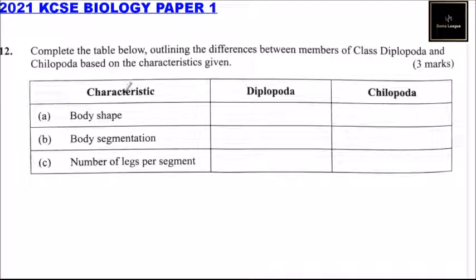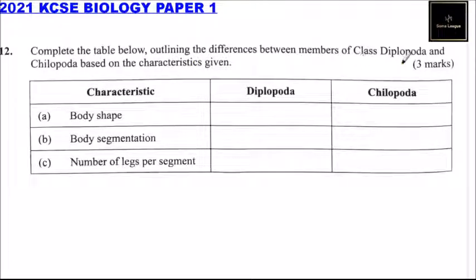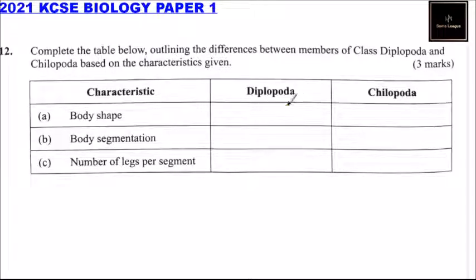Question number 11: complete the table below outlining the differences between members of Class Diplopoda and Chilopoda based on the characteristics given. We have a table here with three characteristics: body shape, body segment, and number of legs per segment.